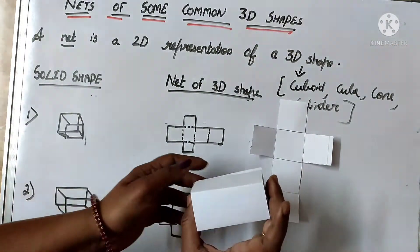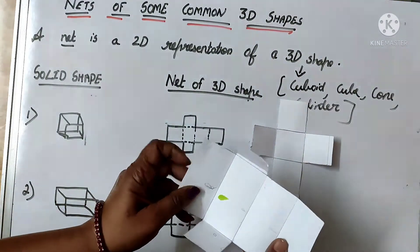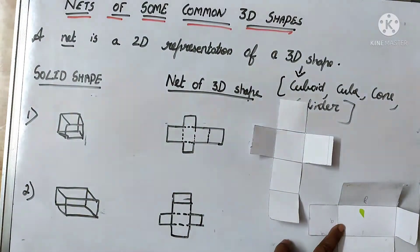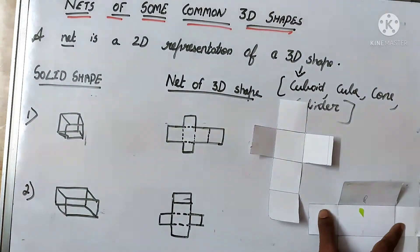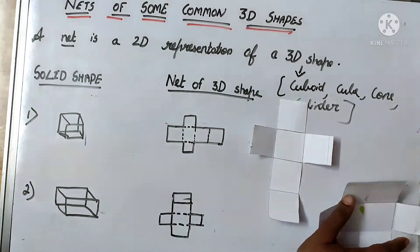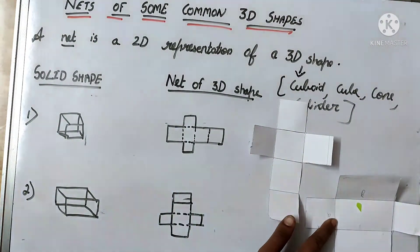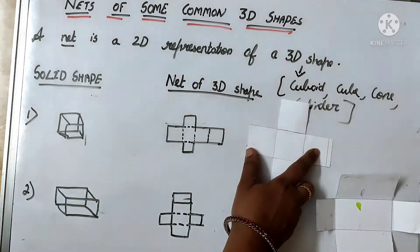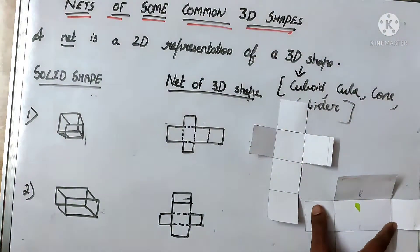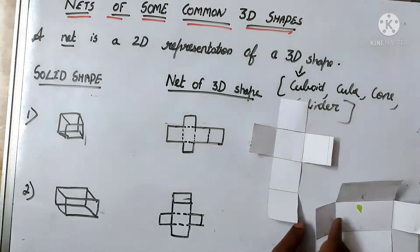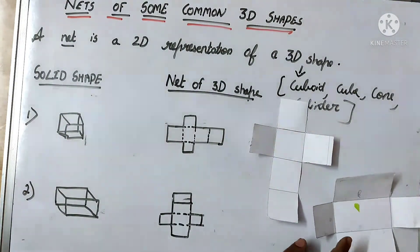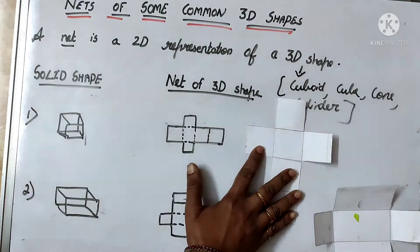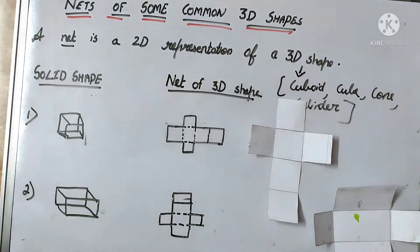Similarly, I have made a cuboid with this one. This is the shape of a cuboid. Now if I open it up, it will look in this form — are you able to see? So this is the net of a cuboid. In a cube, how many faces? 1, 2, 3, 4, 5, 6 — six faces, all squares. And in the cuboid, how many faces? 1, 2, 3, 4, 5, 6 — this is the net of a cuboid.